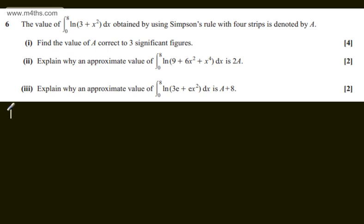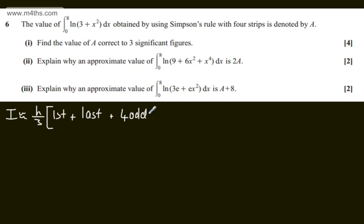Using Simpson's rule, we can state that the integral will be approximately equal to h over 3, multiplied by the first plus the last plus 4 lots of the odds plus 2 lots of the evens. We have 0 to 8 and we have 4 strips. 4 strips gives rise to 5 ordinates, so x₀ is equal to 0.